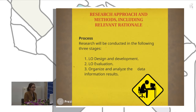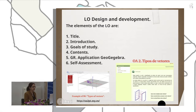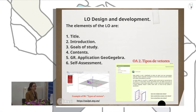The methodology involved a process in three stages. The first was the design and development of the learning objects, and the second was the learning object evaluation. These first stages were not finished at the time I wrote the paper, but this presentation includes the new information. The first stage — learning object design and development — included elements such as title, introduction, goals, study content, geometric representation, and self-assessment.